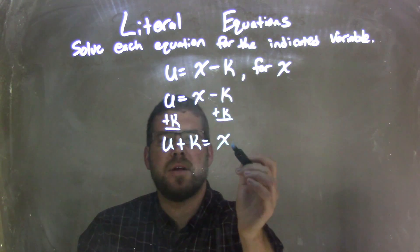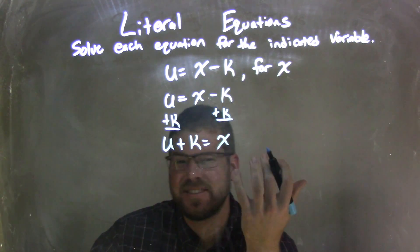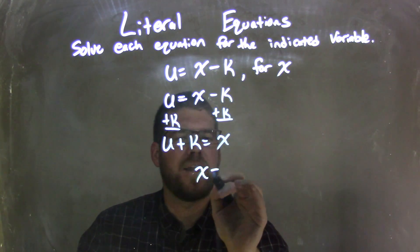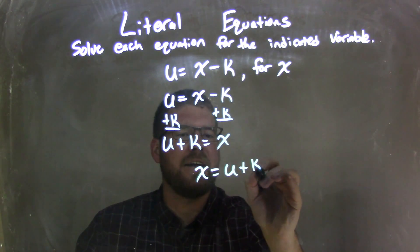Well, now x is isolated. Fantastic, right? So I'm going to rewrite this with x first because that looks nicer, and I say that every time, I know. So x equals u plus k, and there we go.